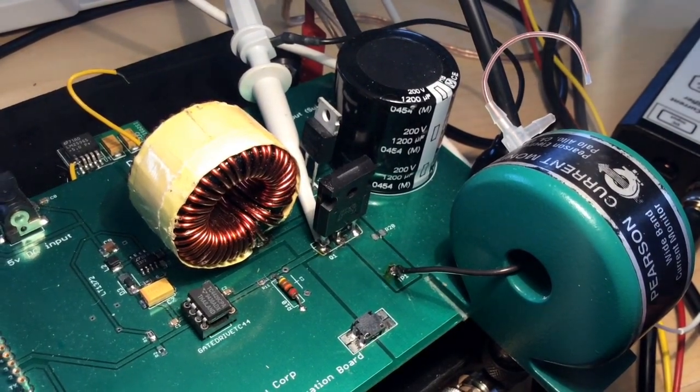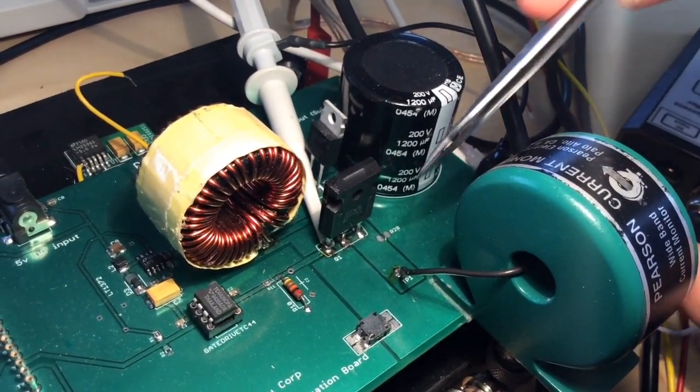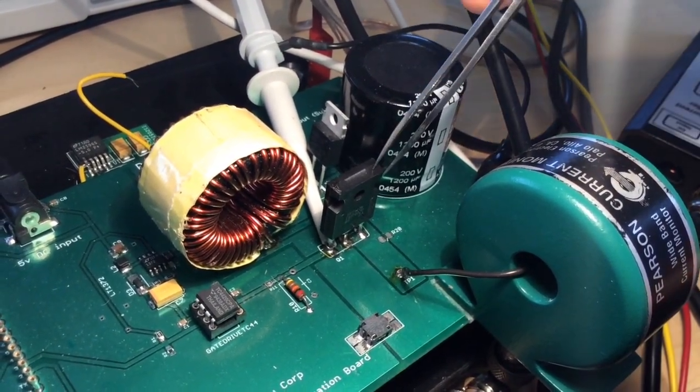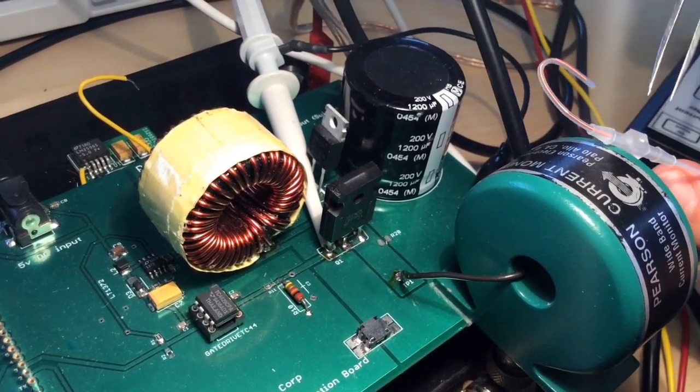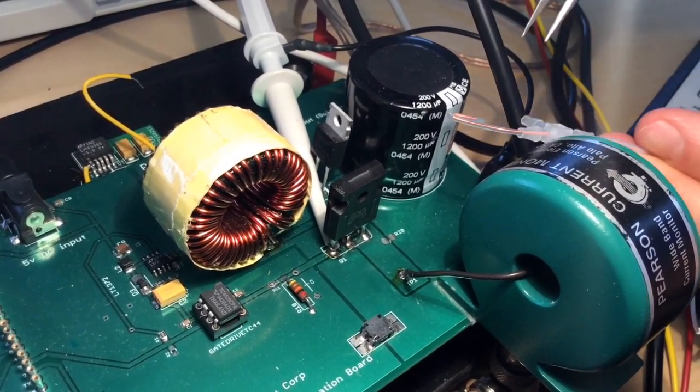We're going to talk a little bit about inserting the Rogowski coil in the legs of a power semiconductor. In this case, a typical TO247 package will be used as a simple demonstration.